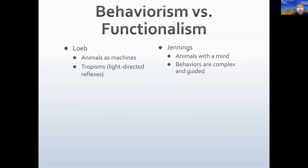Loeb's point is that we can have what appears to be goal-directed behavior — plants do need light for photosynthesis, so in a way that is a goal — without the organism being consciously aware of its goals. Those goals need not play any direct role in the mental control of behavior. Loeb says we don't need the mentalistic side of things to explain how animals or plants can achieve goal-directed action.